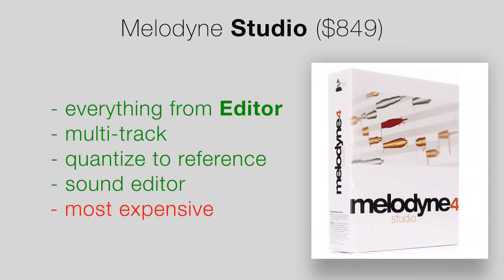Studio is $350 more than Editor, so it's a big upgrade. As of recording this, all upgrades or cross-grades from different versions only make you pay the difference in price. So if you start off with Melodyne Essential and then want to upgrade to Assistant and then Editor, you just pay the price difference as you go. There's absolutely no risk in starting with the lowest version. And of course, there's a 30-day free trial for all of these versions, so test it out and see if you like it.